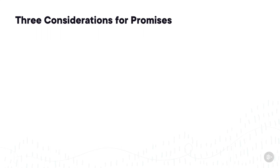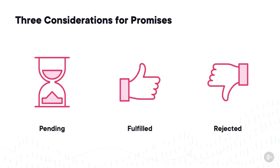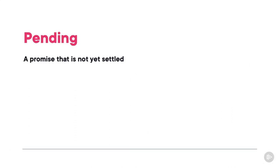As you think about consuming promises and what you need to do to create your own, what are the major aspects you need to consider? Right — you need to make sure that you manage the three states: pending, fulfilled, and rejected. Pending is probably the easiest state to handle because a pending promise is just a promise that has not yet settled. When you create a promise, it's pending until you tell it to move to the fulfilled or rejected states.